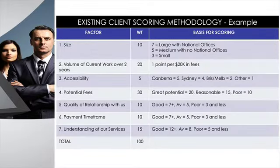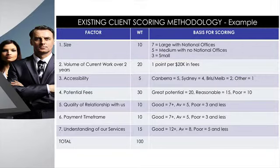This is a client methodology from a long-term client. What we looked at was: what are the factors we're going to use? We looked at seven factors in terms of deciding whether they're an A-class, B-class, or C-class client. The factors we looked at were: size, the volume of their current work over the last two years, how accessible they are, and where they're located.